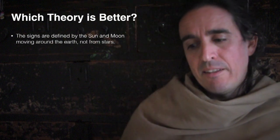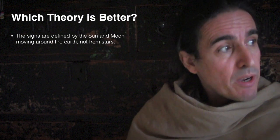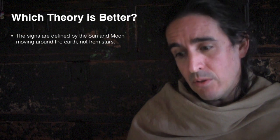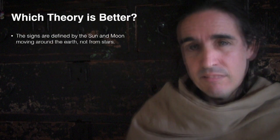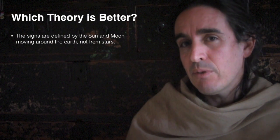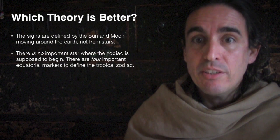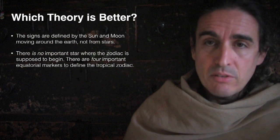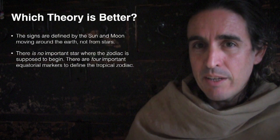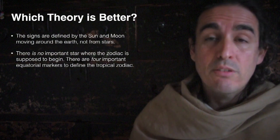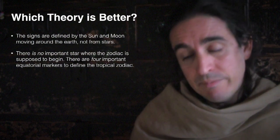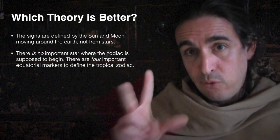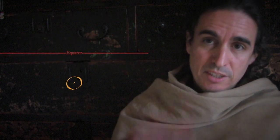As we saw, the signs are defined by the sun and the moon and are an abstraction based on the sun and moon — not an abstraction on the stars. So why should a star be the beginning point? If the zodiac were supposed to start from a star, you would think there'd at least be a star at that spot. But there is no star there. On the other hand, there is definitely an important turning point in the tropical system where you can clearly measure the zodiac — in fact, there's not just one, there's four.